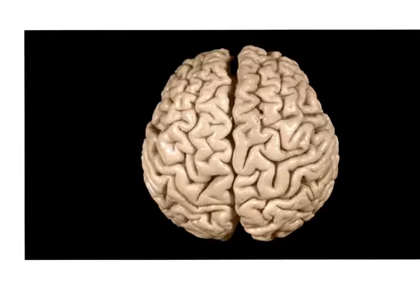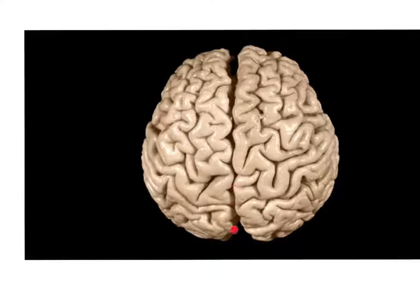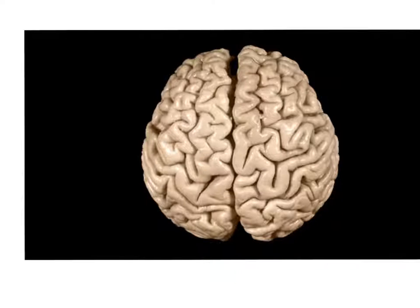On every accurate image you may have seen of the brain, you may have noticed that it looks like the cerebrum is split in two, right along here. That is because the cerebrum is split in two right along here. It's split into two things we call hemispheres, because the cerebrum looks kind of like a sphere.